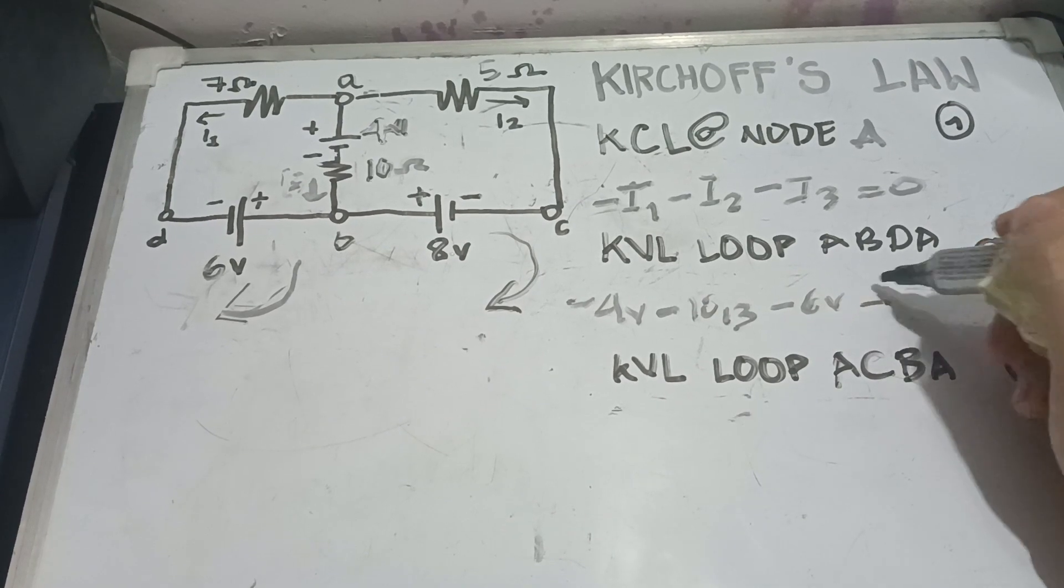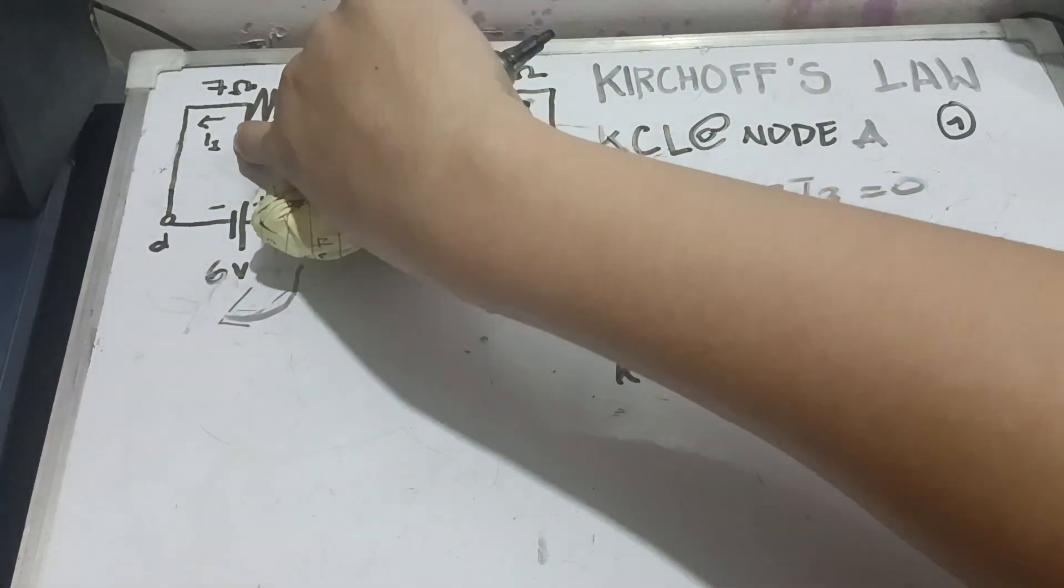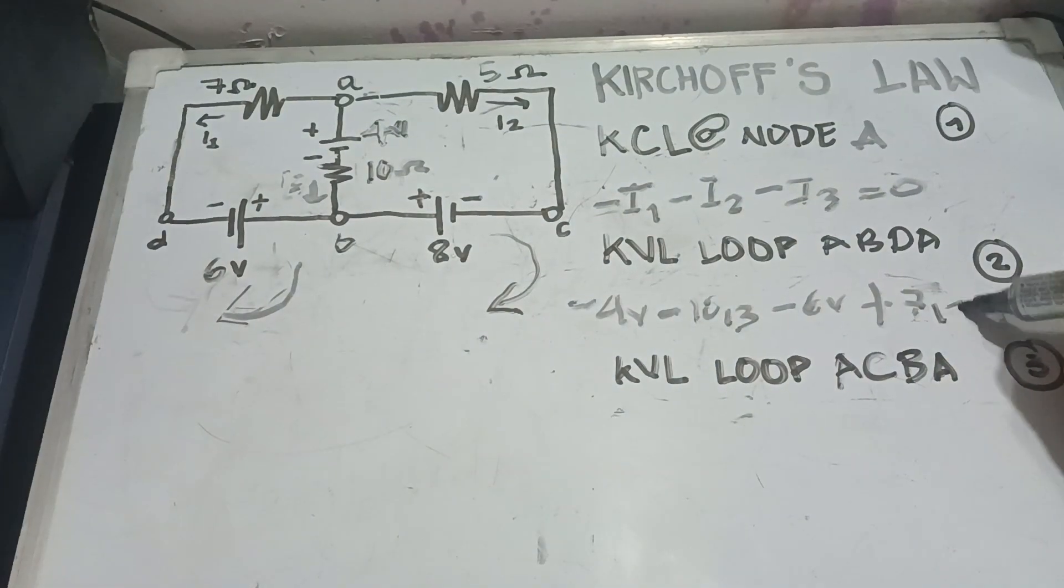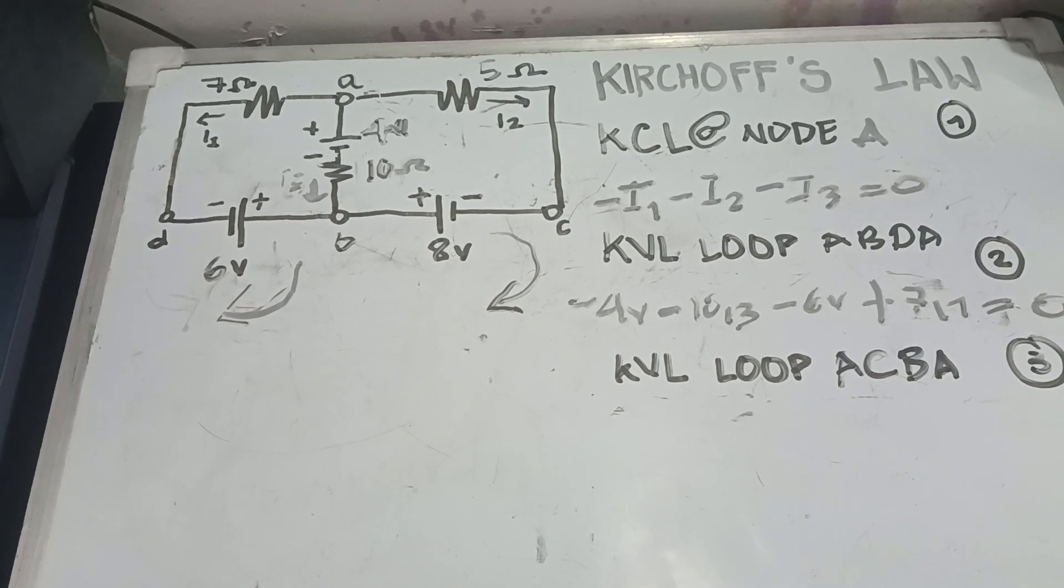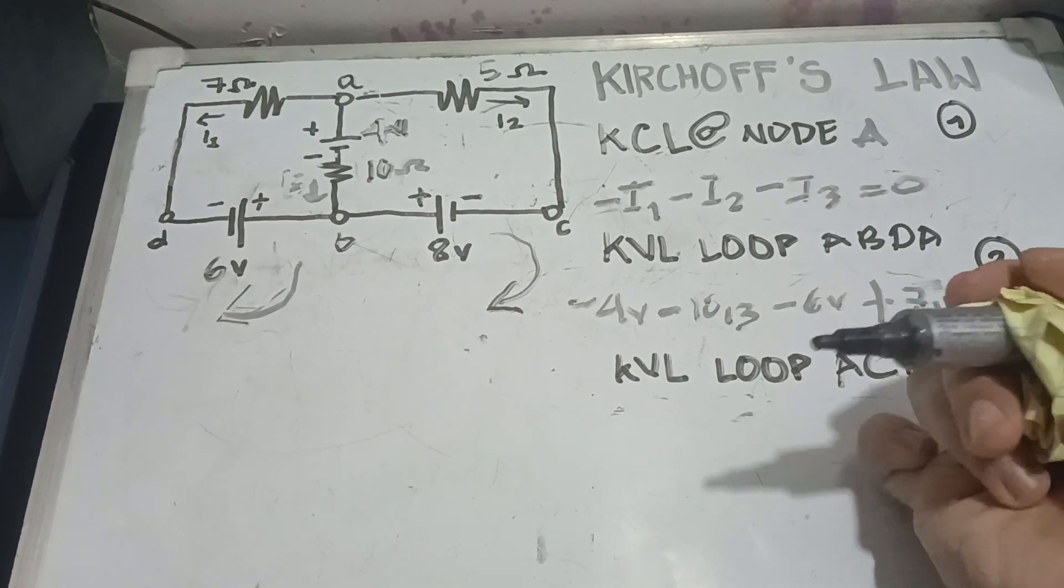So, it's going to be positive 7 I1 and equal to 0. So, now, let's move forward to our KVL loop ACBA.